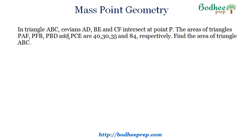The question says that in triangle ABC, cevians AD, BE, and CF intersect at point P, and the areas of triangles PAF, PFB, PBD, and PCE are 40, 30, 35, and 84 respectively.